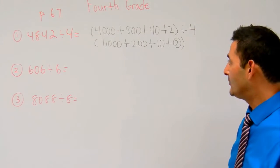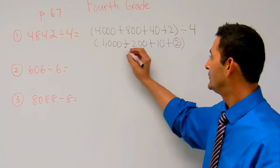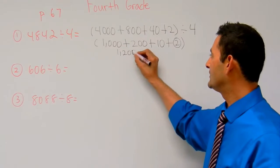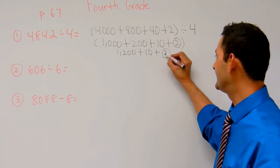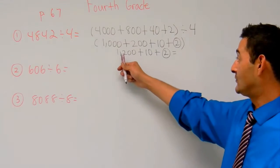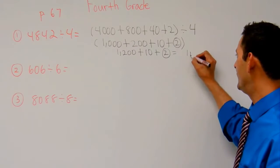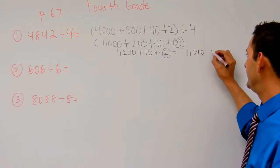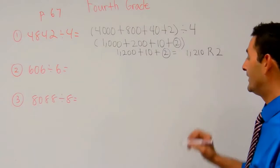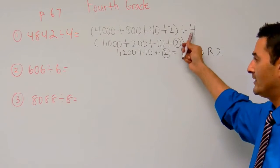Now I'm going to add all these up together. So 1,000 plus 200 is 1,200 plus 10 plus that 2 that we couldn't divide by. So that's going to be 1,210 and we have a remainder of 2.